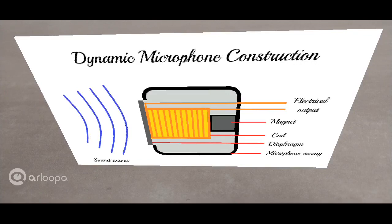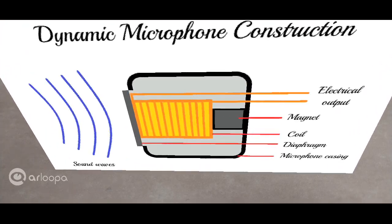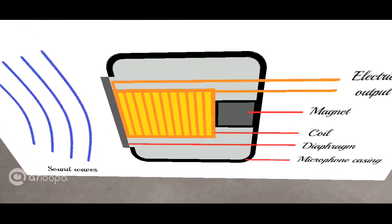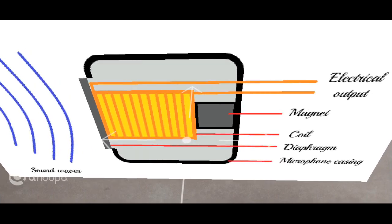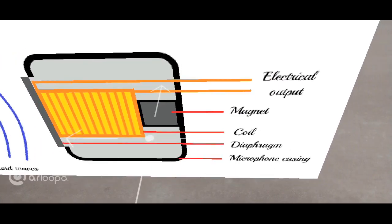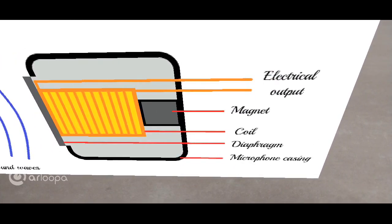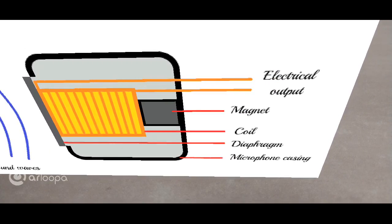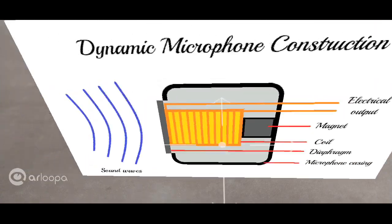Here's the construction of the dynamic microphone. As you can observe, this is the microphone casing. The gray bar toward the left represents the diaphragm, which is a free-moving object. The diaphragm is connected to a coil of wires represented in yellow and orange. Then you have a permanent magnet, which is fixed and not free to move. This setup is what creates the electromagnetic effect.